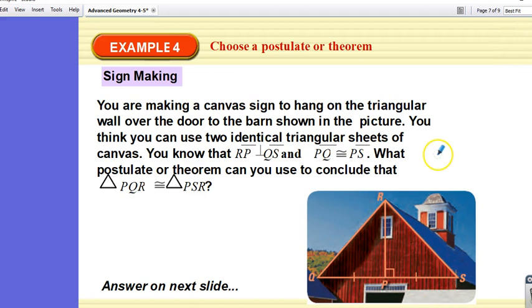Alright, so looking at the next one. You are making a canvas sign to hang on the triangular wall over the door to the barn shown in the picture. If you think you can use two identical triangular sheets of canvas, you know that RP is perpendicular to QS and that PQ is congruent to PS. What postulate or theorem can you use to conclude that the triangles are congruent? So let's look at what we have so far. So we have RP is perpendicular to QS. RP is perpendicular to QS, so that means that these are 90 degrees. So we have an angle so far, right? PQ is congruent to PS. So now we have a side and an angle. Anything else we know in the diagram that's not marked? Yeah. RP is congruent to RP because of reflexive. So now we have side, angle, side. These two triangles are congruent by side, angle, side. Done.